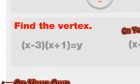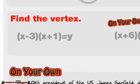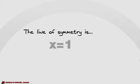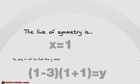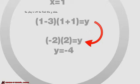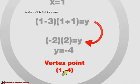We're going to find the vertex now. We've got x minus 3 times the quantity of x plus 1. At the vertex, it's going to be halfway in between the x-intercepts. Find the line of symmetry first using negative b over 2a — it gives us x equals 1. Then we plug that 1 back in for the x value. So 1 minus 3 times the quantity of 1 plus 1 gives us negative 2 times 2 equals negative 4. Our vertex point is (1, negative 4).